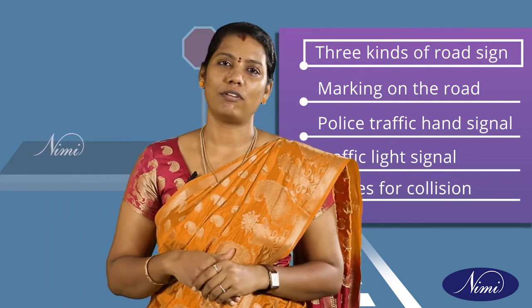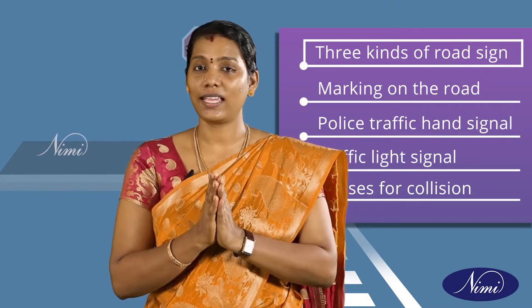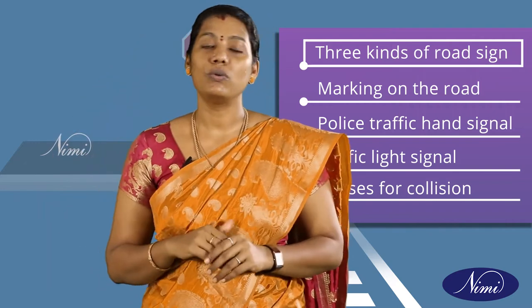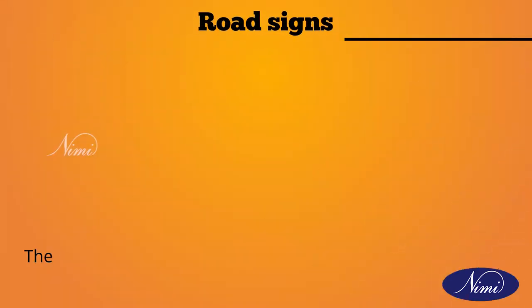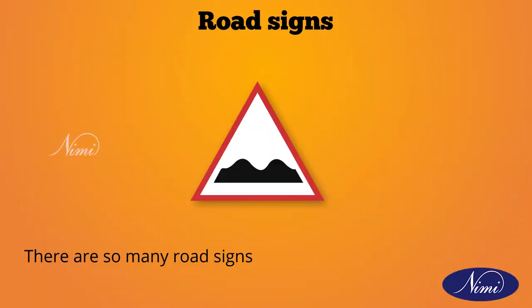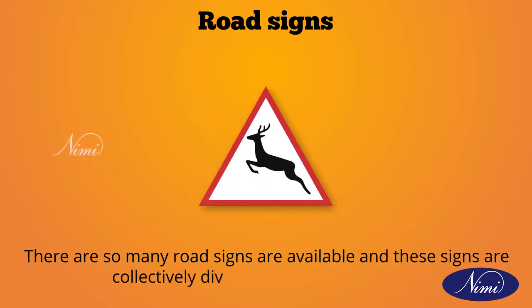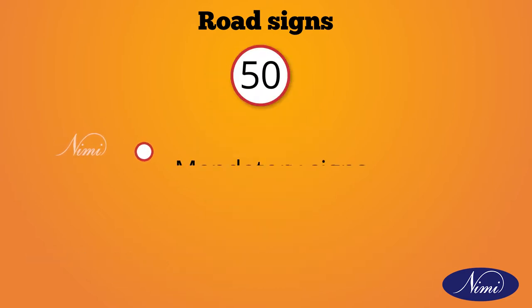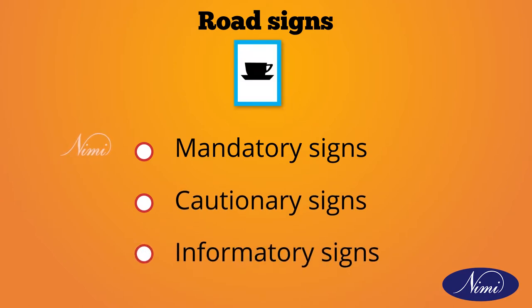Road signs or traffic signs are signs erected at the side of the road or above the road to give information and to provide conditions of the road to road users. There are many road signs available and these signs are collectively divided into three categories: mandatory signs, cautionary signs and informatory signs.